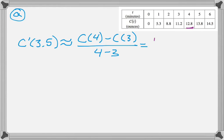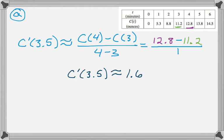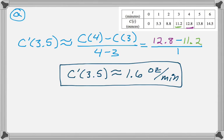So C of 4 is 12.8 minus C of 3 is 11.2, and that's over just 1. So C prime of 3.5 is approximately 1.6. And I need to use the units. So it's the units of the numerator, ounces, and the denominator is minutes. So ounces per minute.